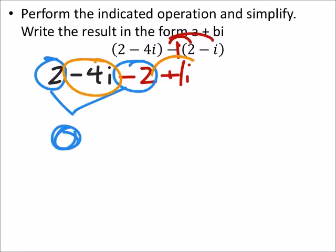And then I've got a negative 4i plus a 1i, which when I combine these, I get a negative 3i.